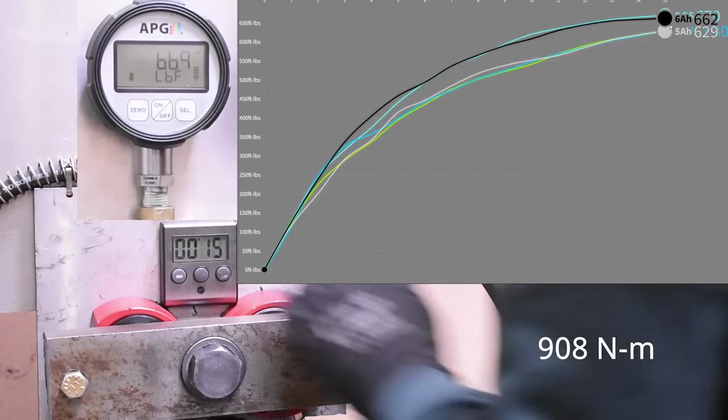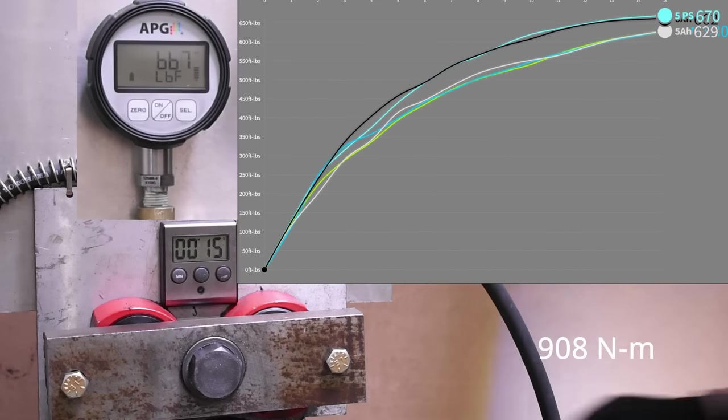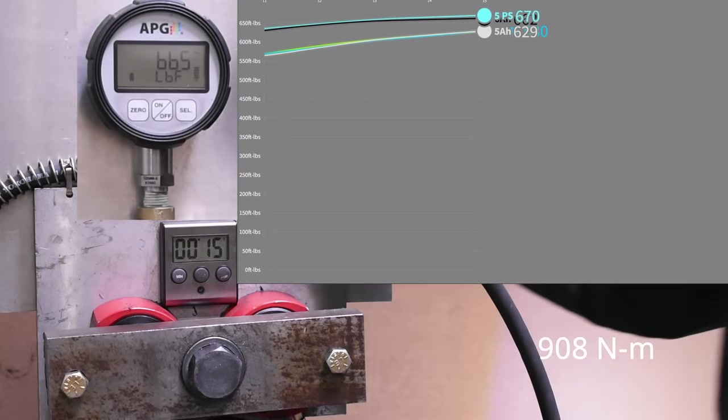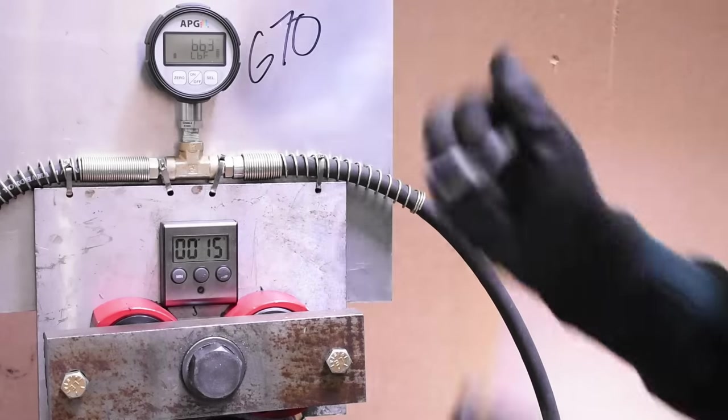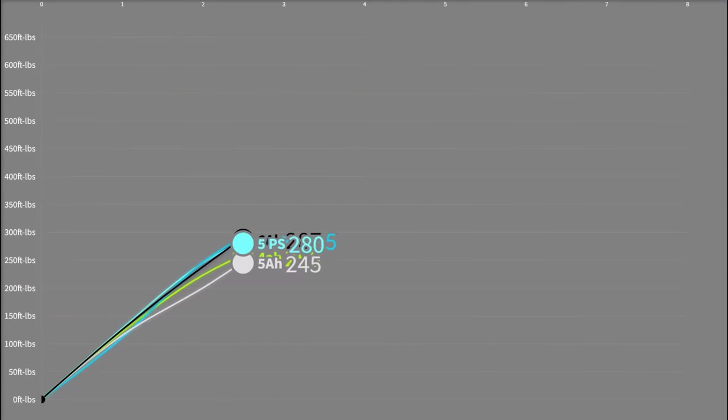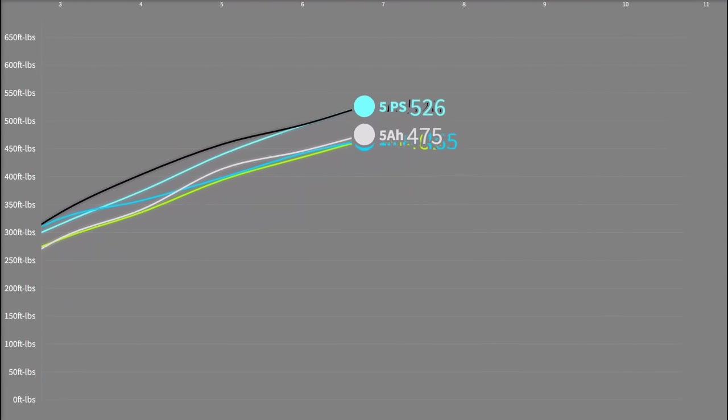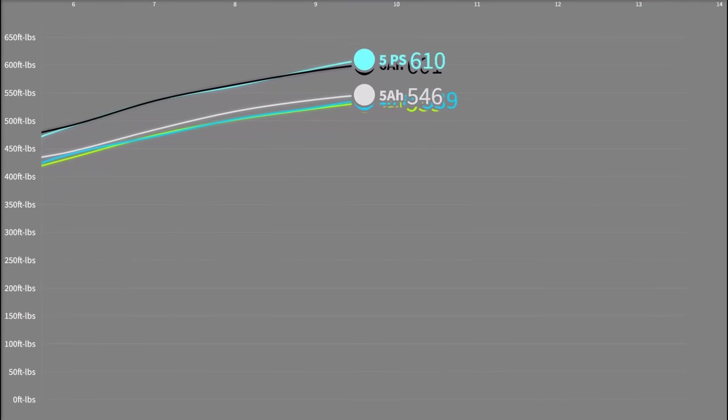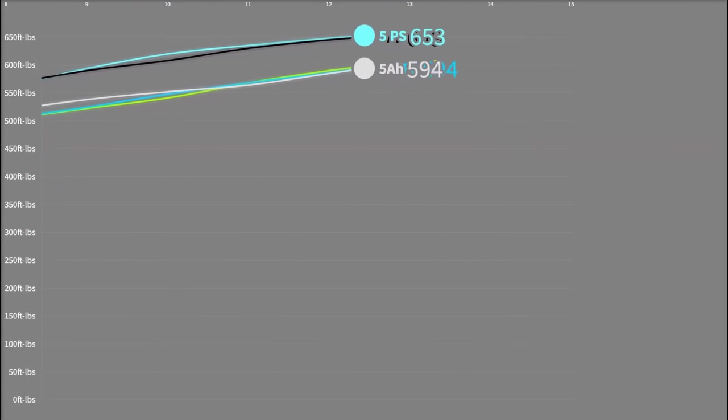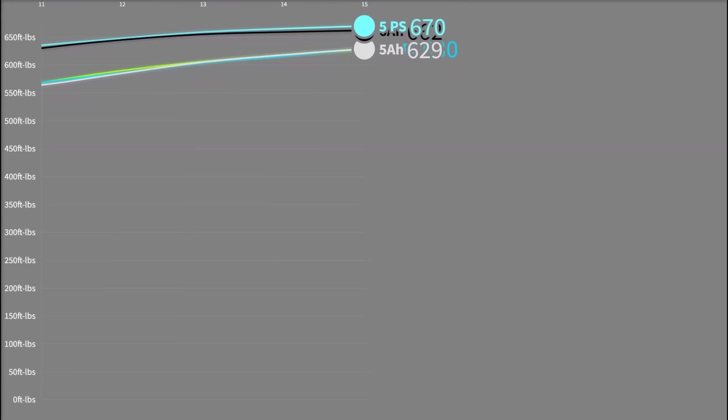670, barely beating the 6 amp hour XR where things are super tight. But a win's a win. Considering the voltage must have been lower at this time based on what we saw previously, it must really be delivering some amps to make up for that, freely providing those with the wider tab contacts on pouch cells.